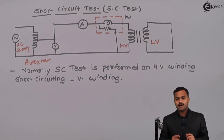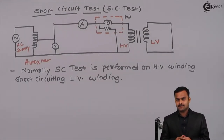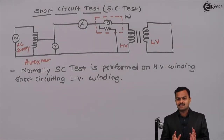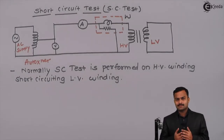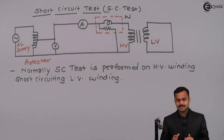Why so? Again, it is because of the restriction of the ammeter. If you perform the test on the low voltage side, a very high current would flow which cannot be measured by the ammeter. That is the only reason — otherwise you can perform both tests on the same winding and get absolutely the same results.